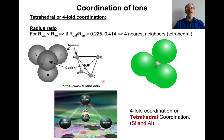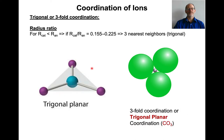As the cation gets even smaller, coordination switches to tetrahedral — four-fold coordination — with four anions around the central ion. Smaller still gives trigonal planar coordination: three anions with a tiny cation in the middle. This is really common in carbonates — it's the fundamental CO3 structure that makes up minerals like calcite and dolomite.